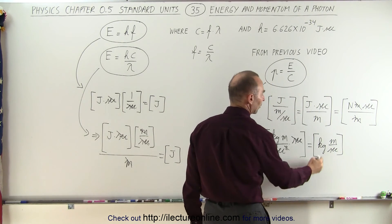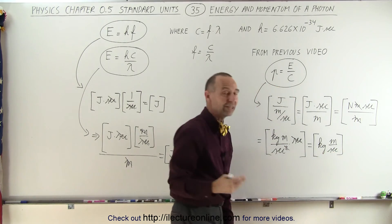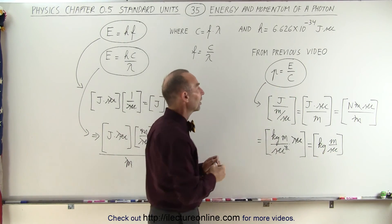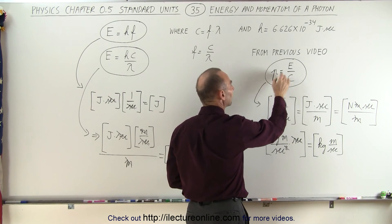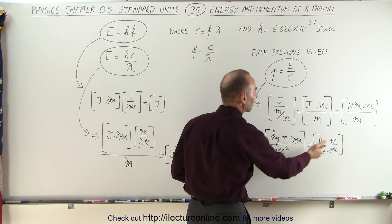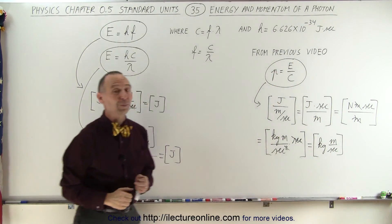And sure enough, that is the product of mass times velocity, which indicates momentum, which means that this is a proper form of momentum of a photon. It's energy divided by the speed of light, and it does give us the right units for momentum.